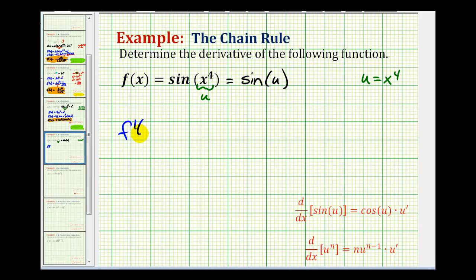And now to determine f'(x), we'll apply the derivative formula for sine u, which includes the chain rule, as we see here. So if we have the derivative of sine u with respect to u, that's going to be cosine u times u'. So we have the derivative of the outer function times the derivative of the inner function.